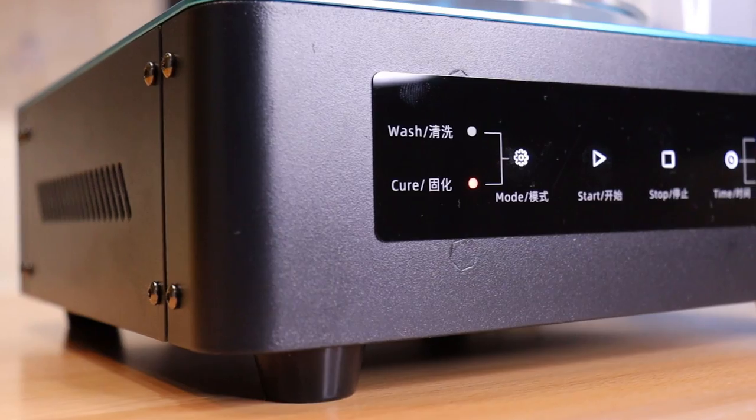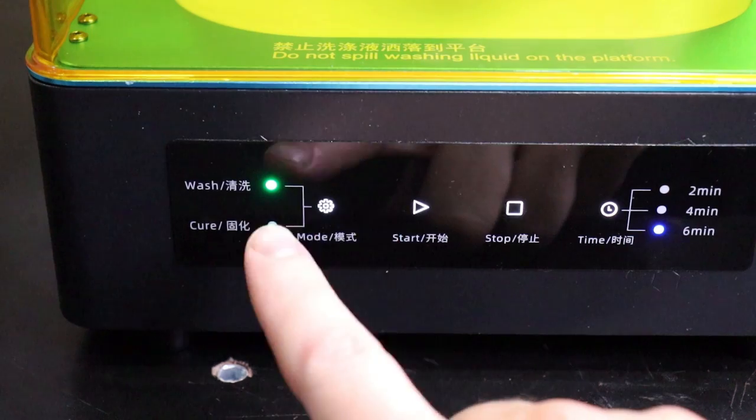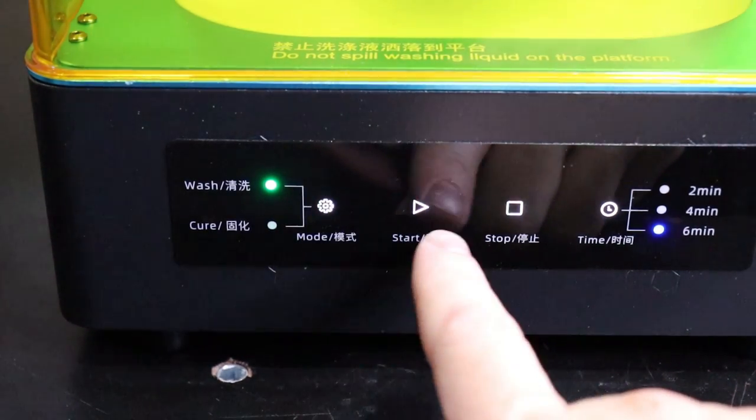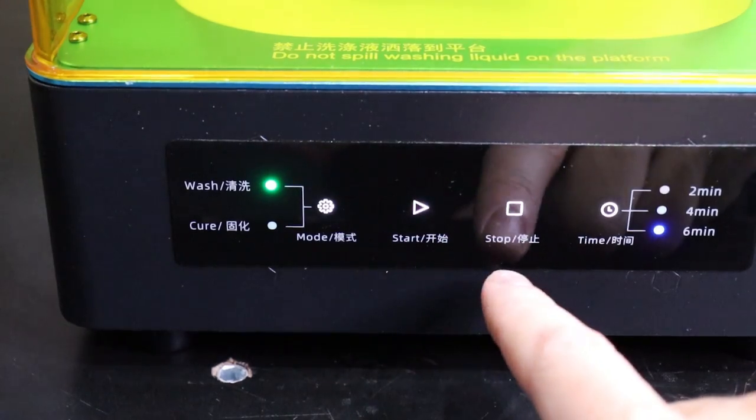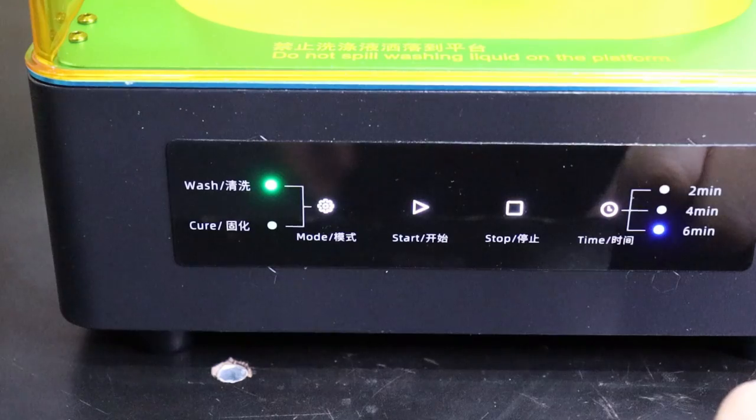So when it comes to controls, they're very self-explanatory. You just go over here and pick which one you want to do, which we're washing right now. You switch by just pushing the gear right here, start obviously starts it, stop, and then how long you want to be washing or curing for. And that's it.